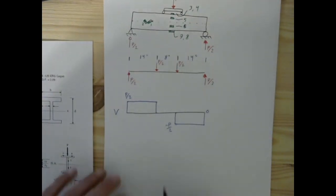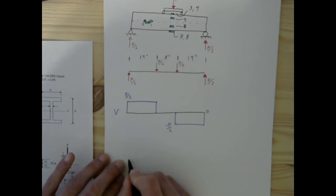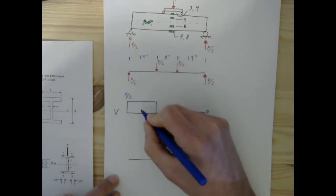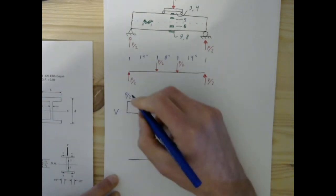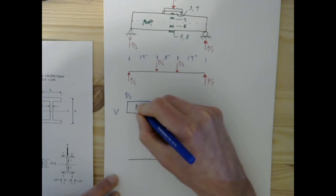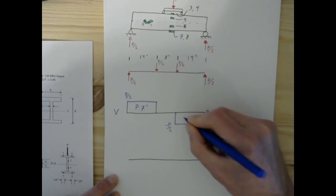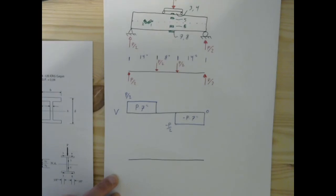Now let's consider the moment. We've got an area right here we can look at. The area is going to be P times 7 inches and right here the area is going to be negative P times 7 inches.